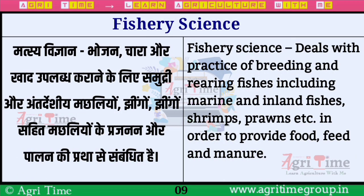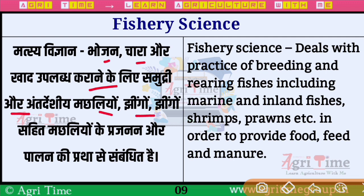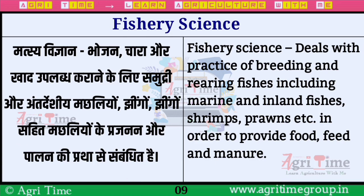अगला branch है Fishery Science — यह चारा और खाद उपलब्ध कराने के लिए समुद्री और अंतर्देशीय मछलियों, झींगों सहित मछलियों के प्रजनन और पालन की प्रथा से संबंध रखती है।